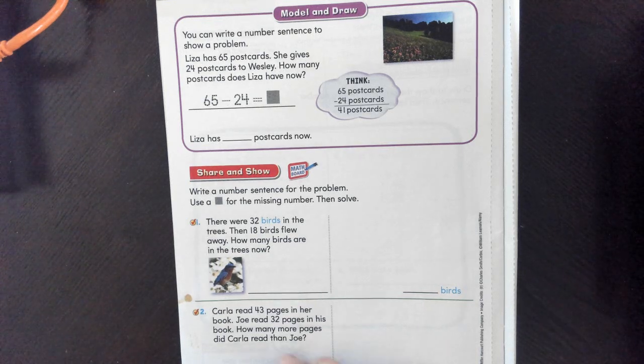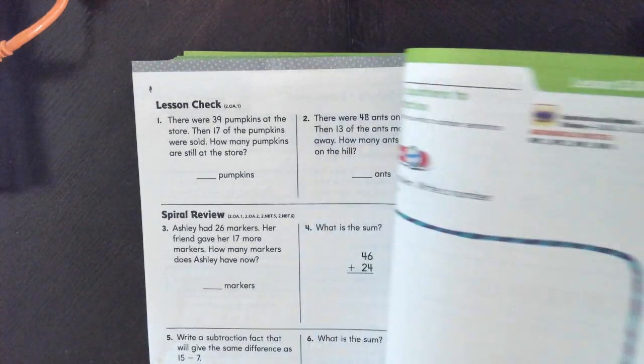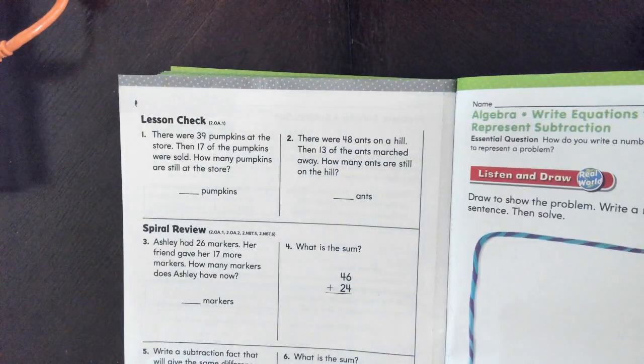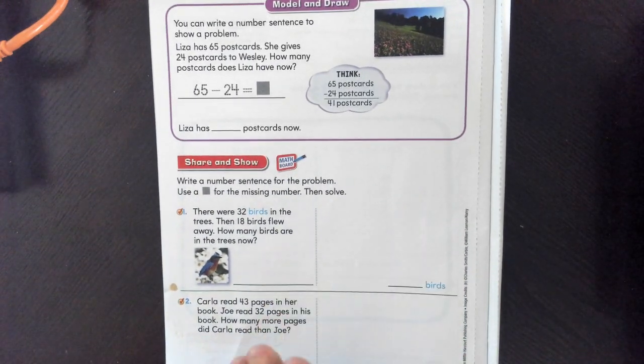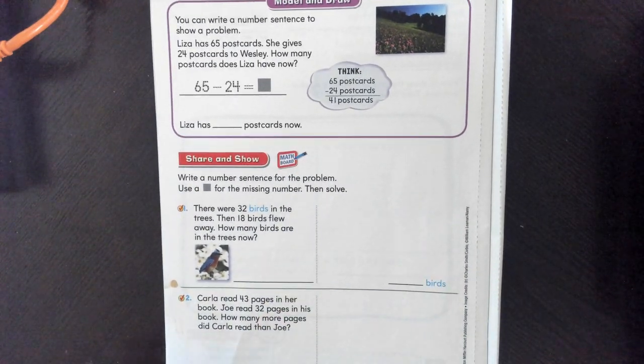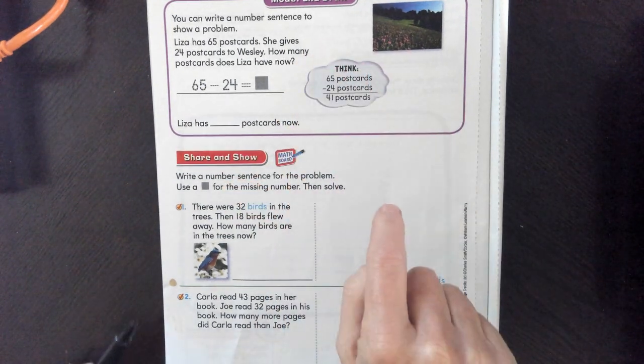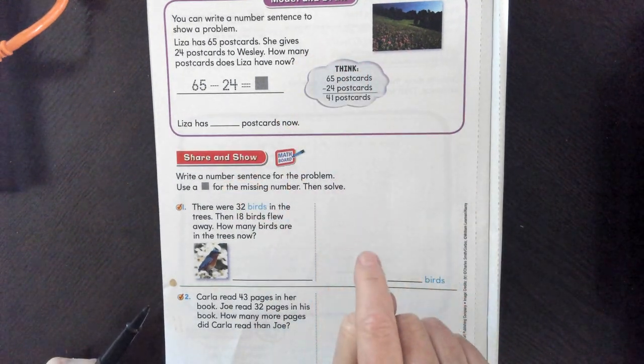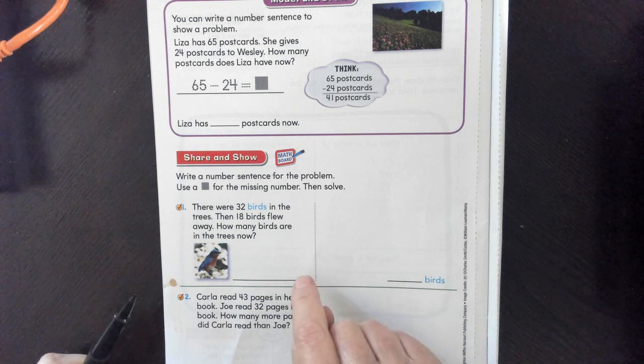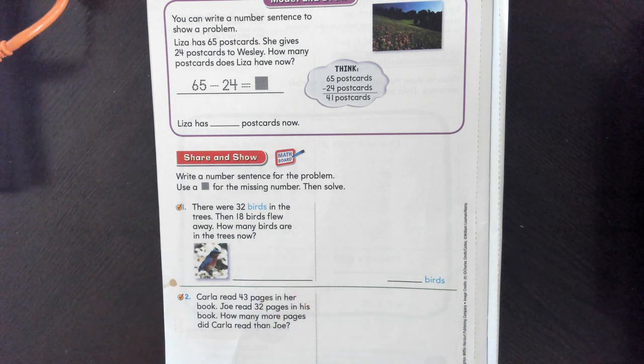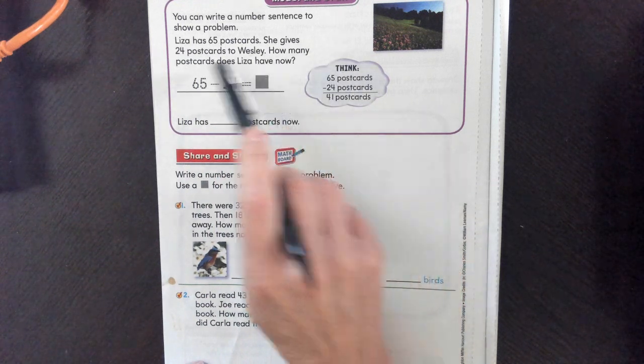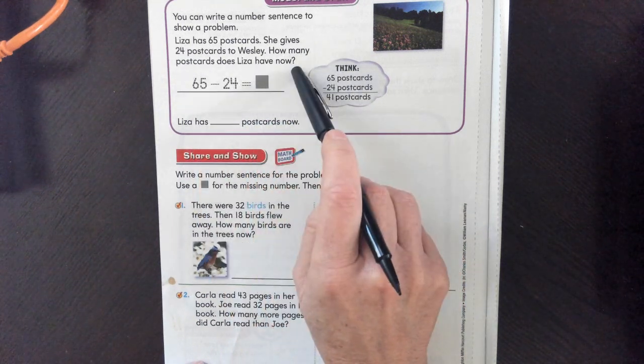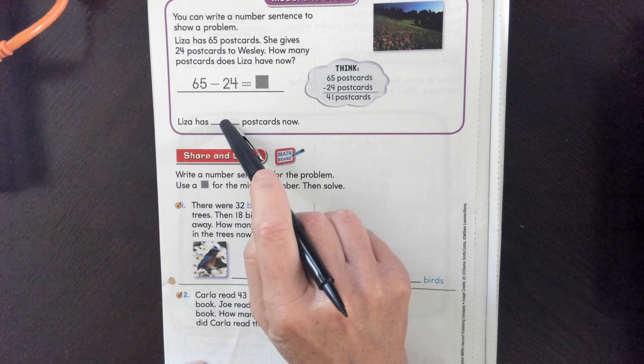Hi, this is GoMath lesson 5.10. I'm not going to worry about the first page. We're just going to go here. Maybe you tried a little bit before now. Maybe you didn't, but let's read it. And each time we're ready, pause, try it before you check. That's how your brain grows. You can write a number sentence to show a problem. So we read it, figure out what the question is, and then figure out how to solve the problem.